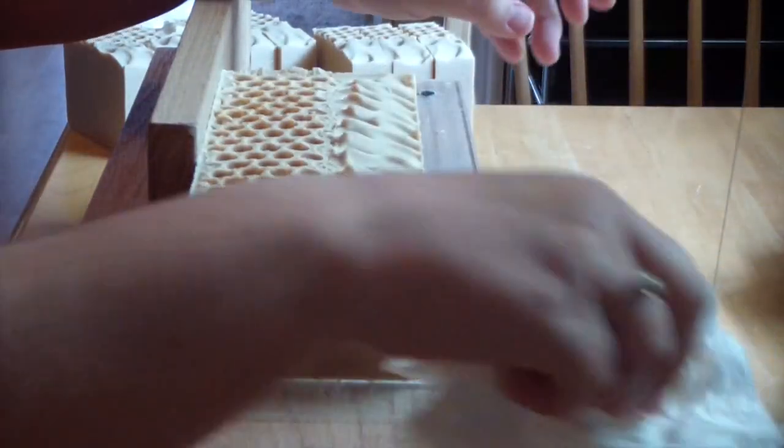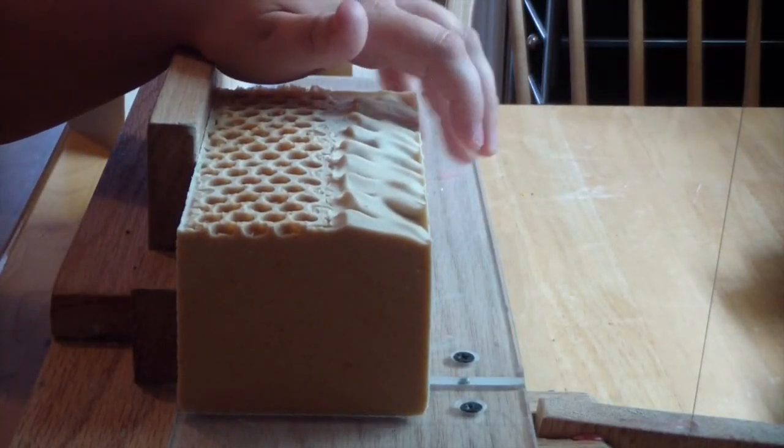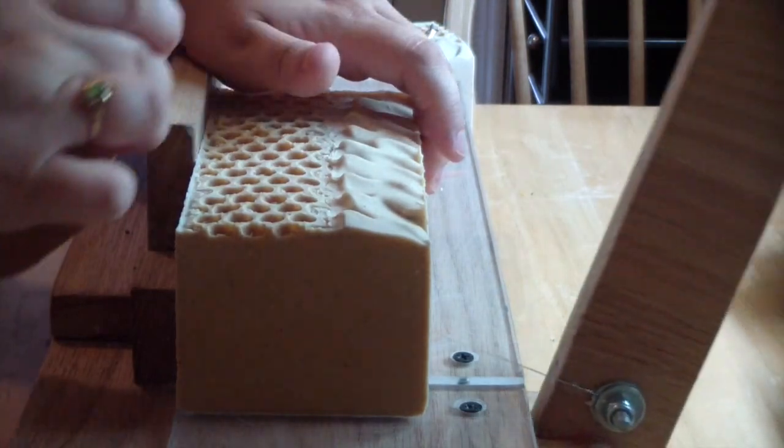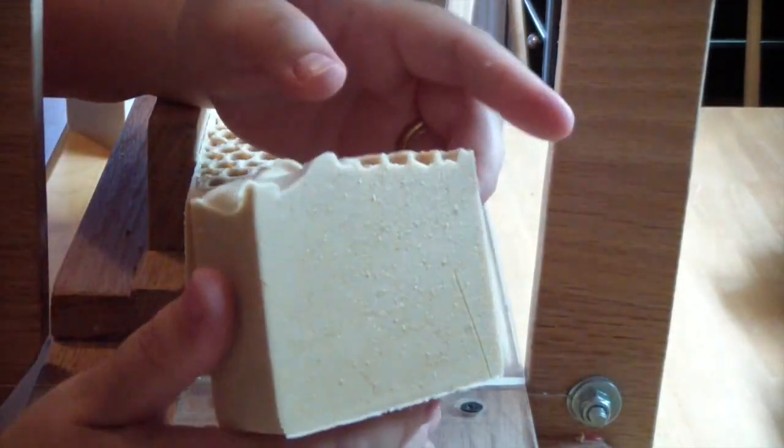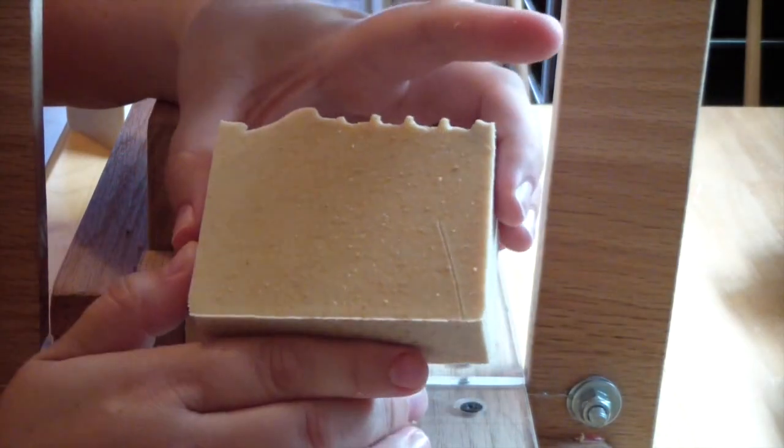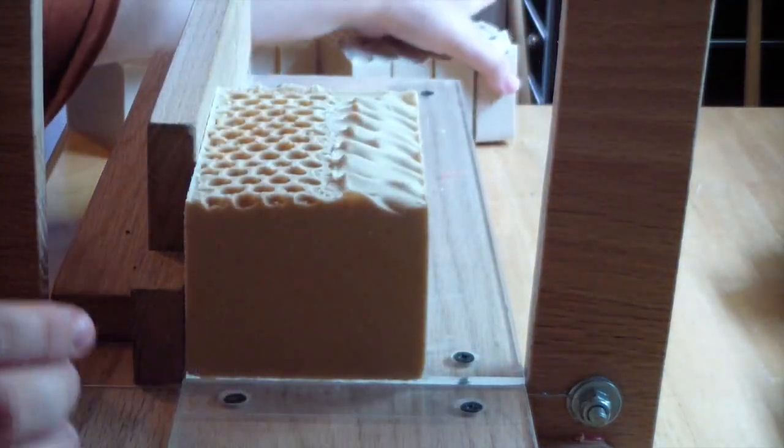The only color I put in here is I add a little bit of titanium dioxide because it goes through a full heavy gel. And the honey that's in there can cause the soap to darken really dark. So, I add just a little bit of titanium dioxide to lighten it up just a little bit. I like the creamy color.